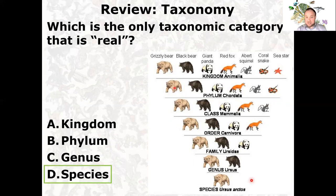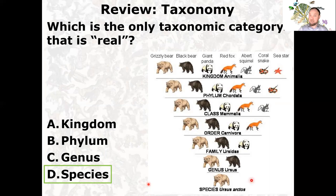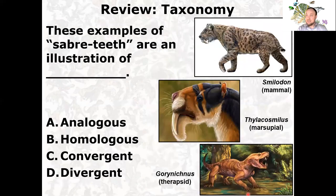All the way down to the species, which is the only real one. Animals, chordates, things with backbone, mammals, carnivora, ursidae — these are categories we created that are useful for lumping organisms together so we can communicate clearly. When you say the word mammal, certain characteristics come to mind: warm-blooded, fur-bearing, live birth, mammary glands. But species — that's the interbreeding individuals, and that's the only thing that's truly real.